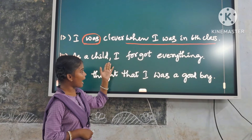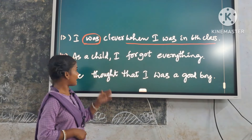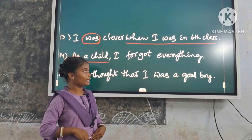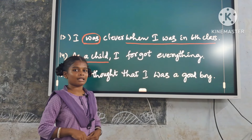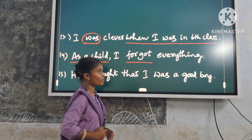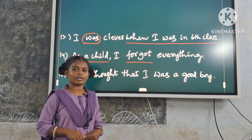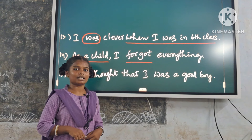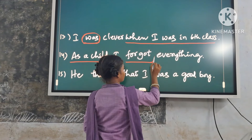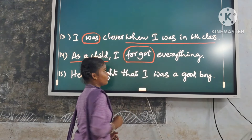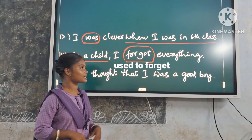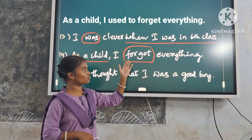Fourteenth example: 'As a child, I forgot everything.' Here, 'as a child' is a time expression. But the verb in the main clause is a stative verb — that is, a verb of mind. So we use only 'used to'. Replace it with 'used to forget'. Answer: 'As a child, I used to forget everything.'